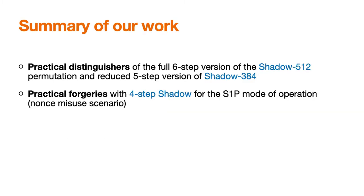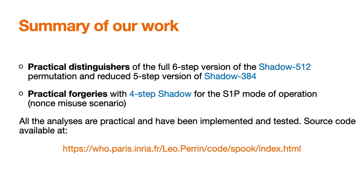So what exactly did we do? First, we found practical distinguishers: one on the full 6-step version of Shadow 512, and another on a step-reduced version of Shadow 384 covering steps 1 to 5, so 5 steps instead of 6. We also found an attack against the integrity of Spook reduced to steps 2 to 5, making 4 steps. All analyses are practical and have been tested, and the source code is available online.